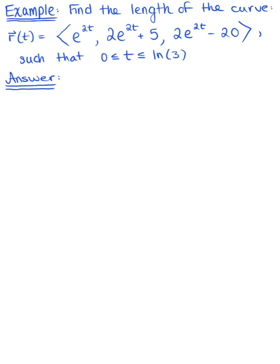Find the length of the curve parametrized by the vector-valued function r of t, such that t is greater than or equal to 0 and less than or equal to the natural log of 3. We want the length of this curve from a to b, and we know that the integrand is going to be defined as the magnitude of the tangent vector, integrating with respect to the arbitrary parameter t.